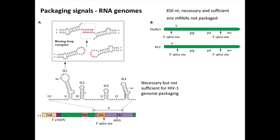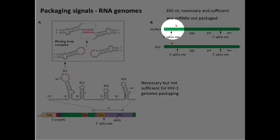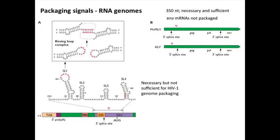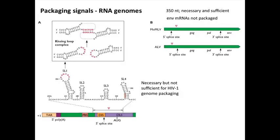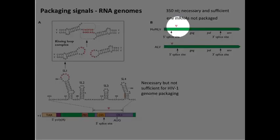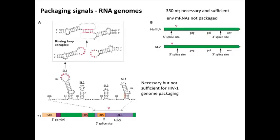On the right are other retroviral packaging signals. Here is Moloney Murine Leukemia Virus — a rather simple packaging sequence. The PSI sequence is right there; you can take that short RNA sequence, put it into other mRNAs, and they will get packaged. So this is necessary and sufficient for packaging. Interestingly, in addition to the full-length viral mRNA, there is a spliced product in some retroviruses that removes this sequence, allowing translation of the envelope glycoprotein. Envelope messenger RNAs are never packaged in Moloney retrovirus virions, because the splice removes the packaging sequence — a neat way to get only full-length genomes into the virion.